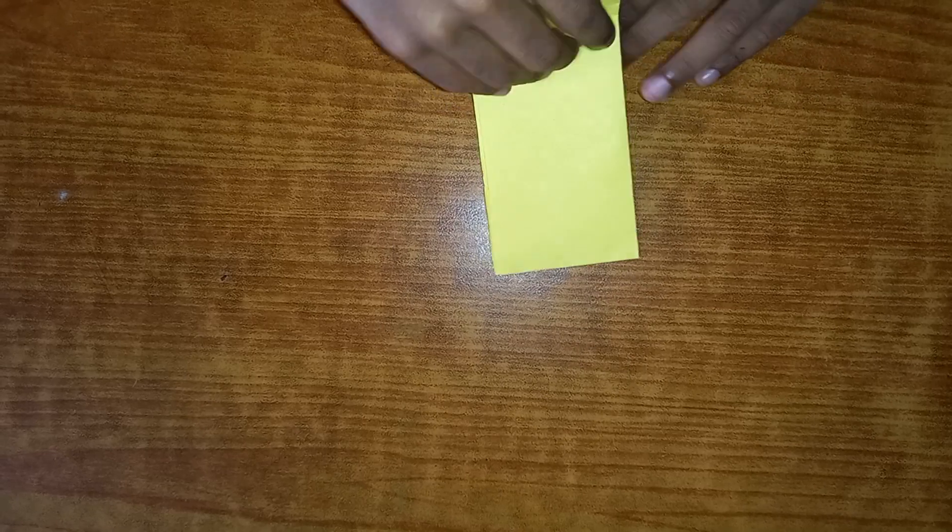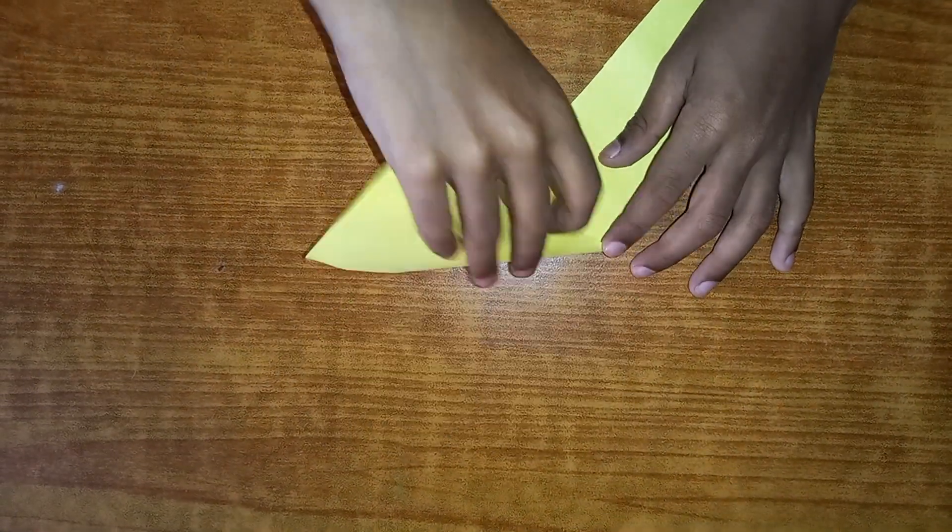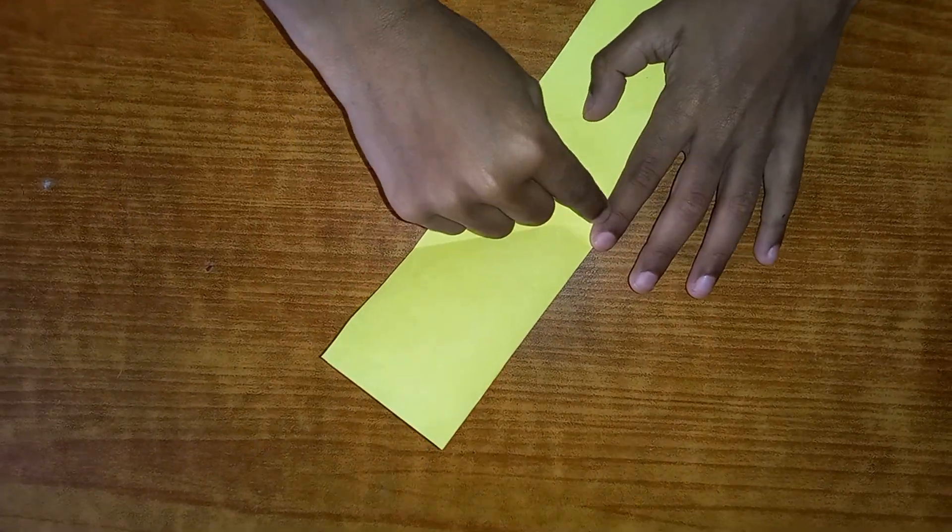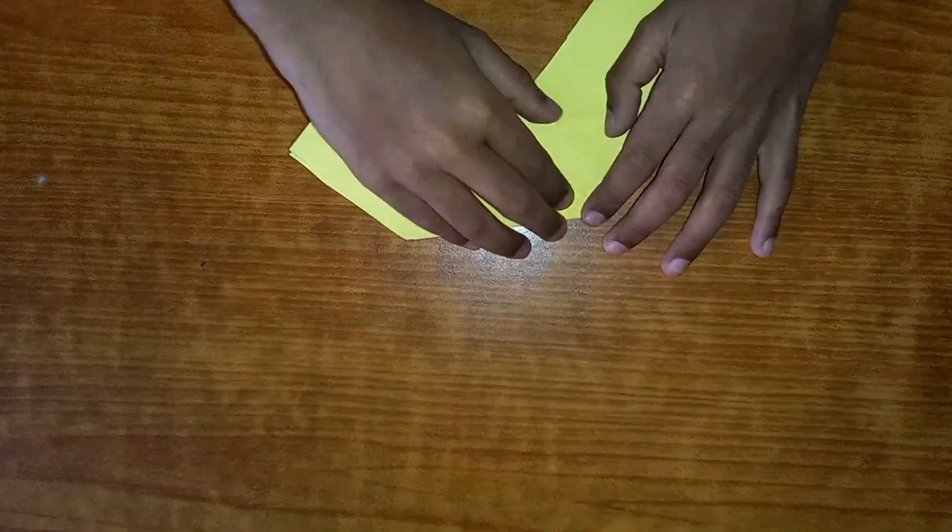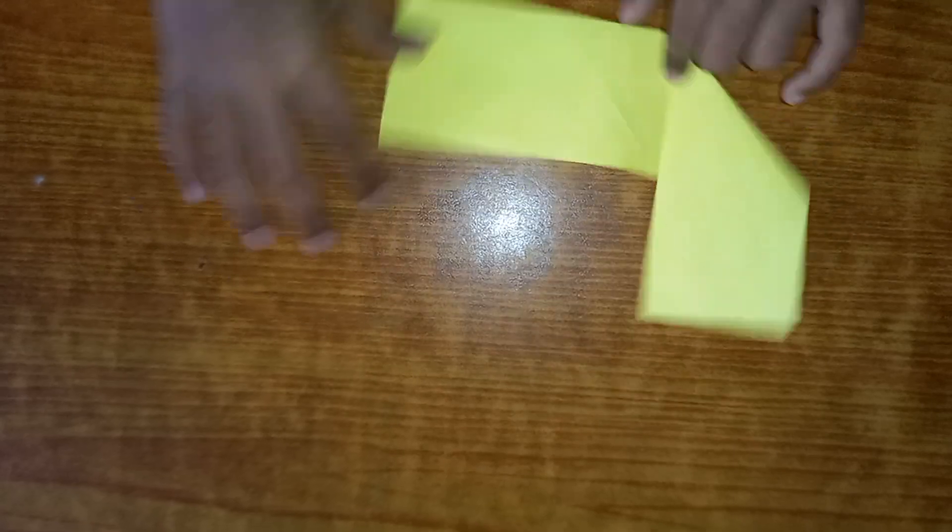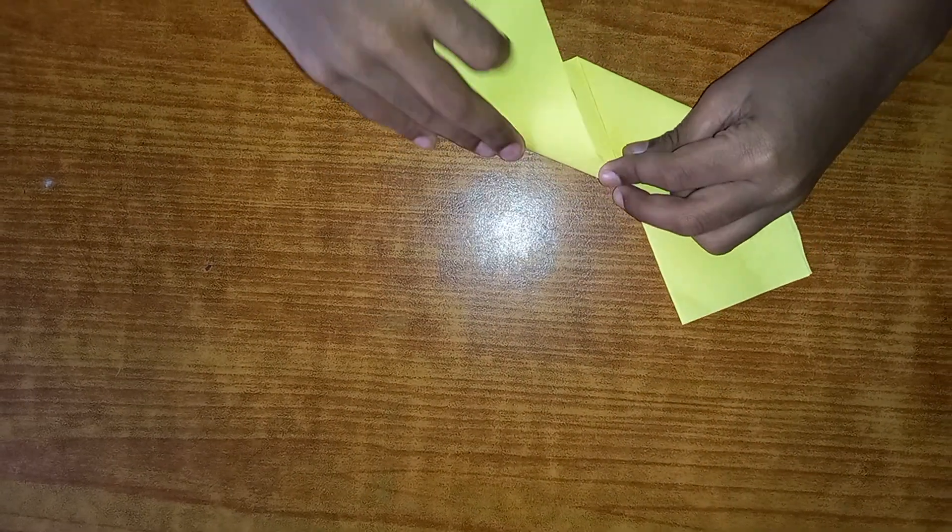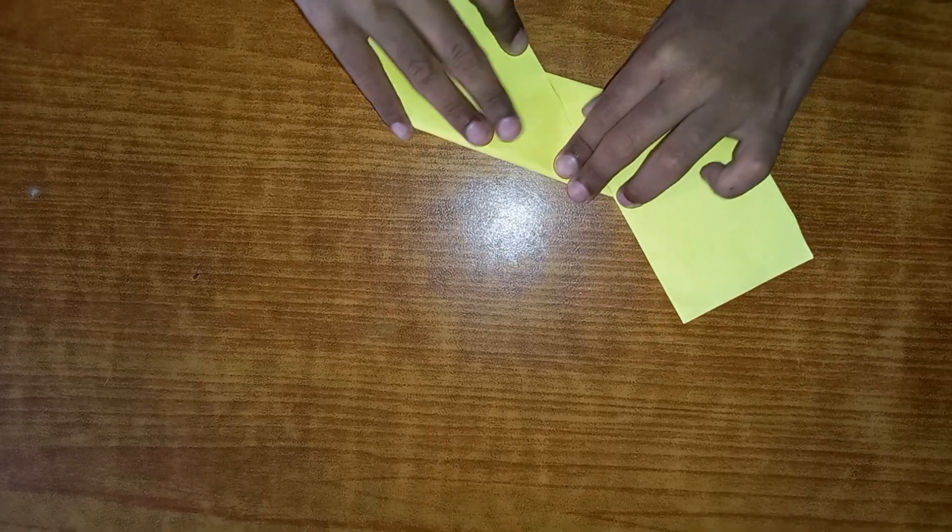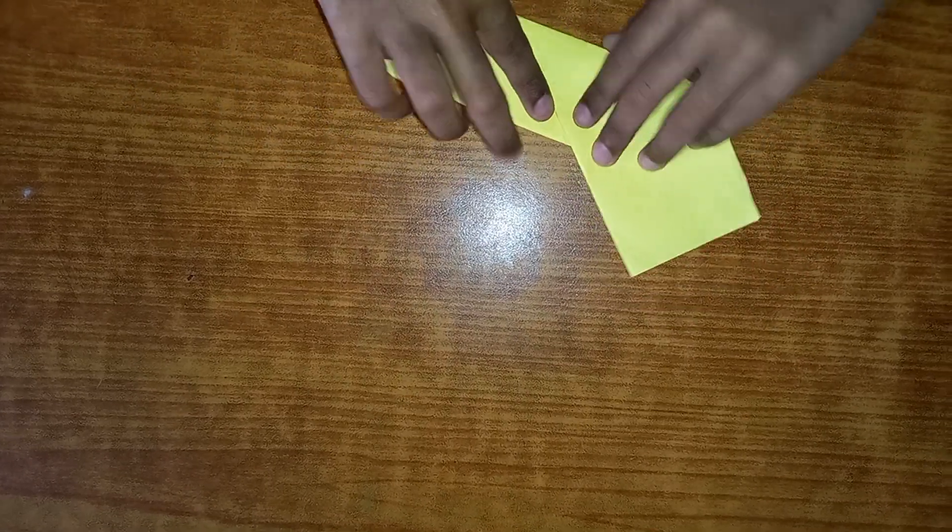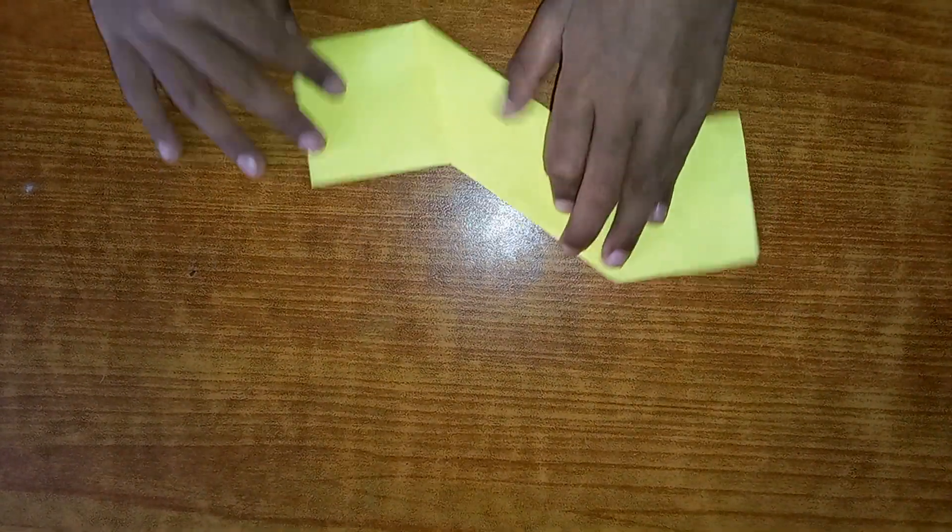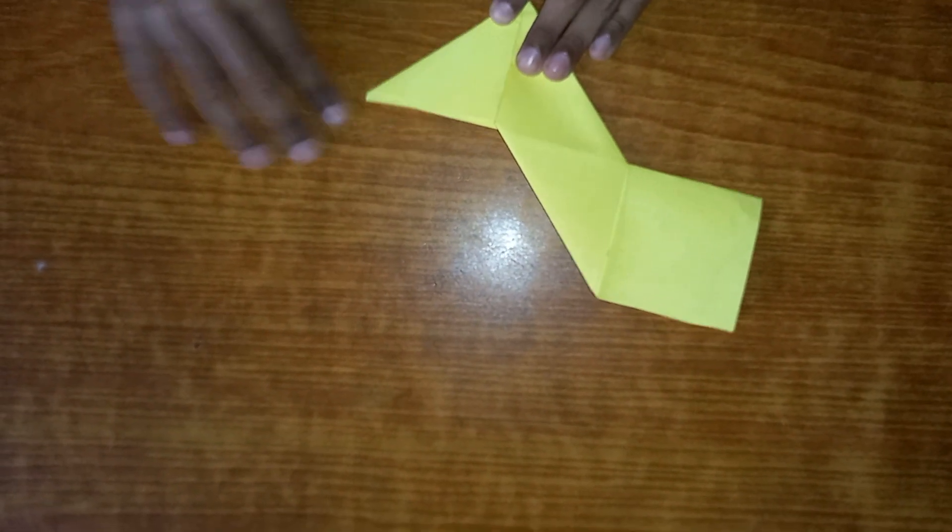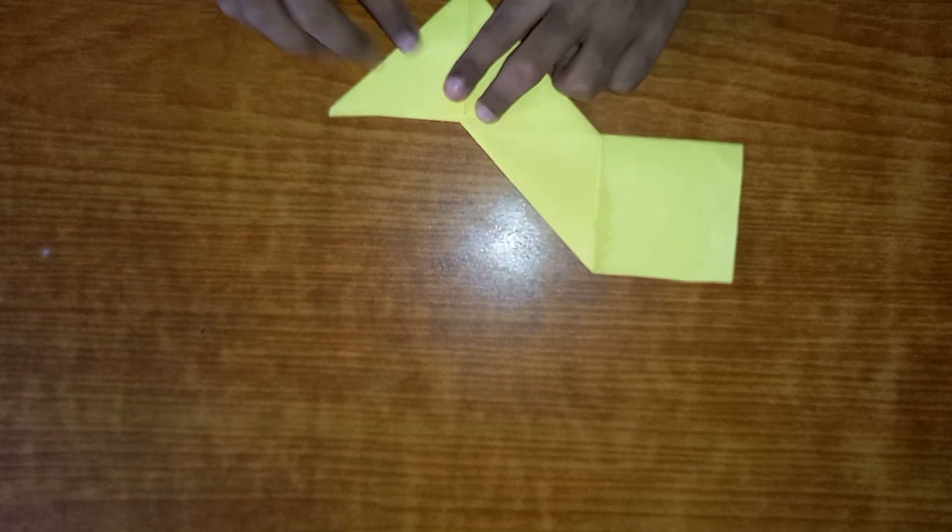Now open it and you're going to do like this with the middle point. You can see here the middle crease. Change the side and do like this.